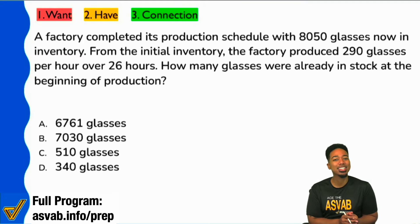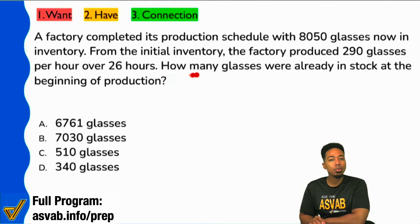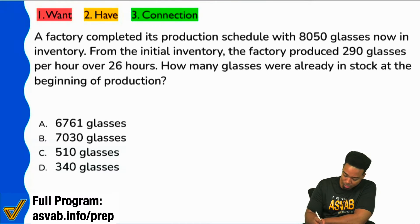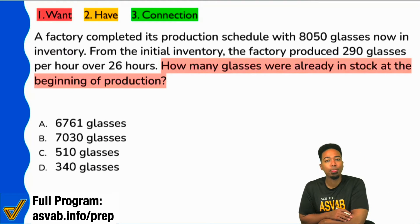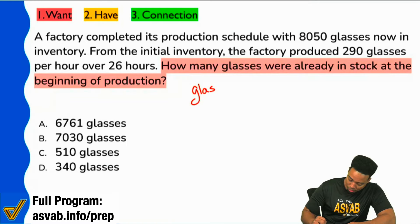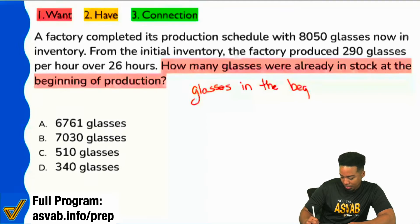So let's go ahead and take a look at the information first by looking at the question sentence: how many glasses were already in stock at the beginning of production? So we can write that out and say: glasses in the beginning equals blank.